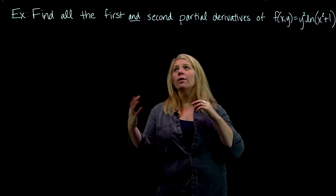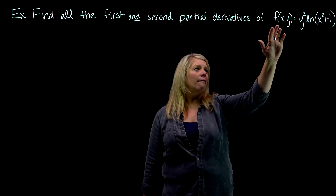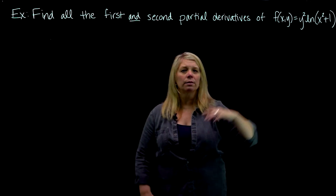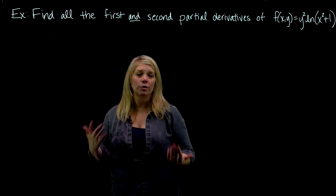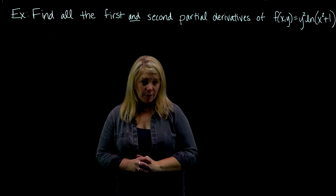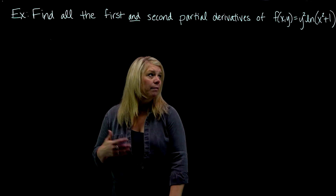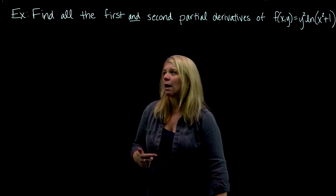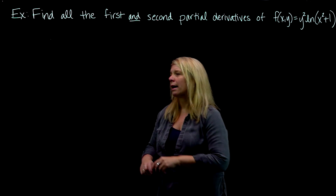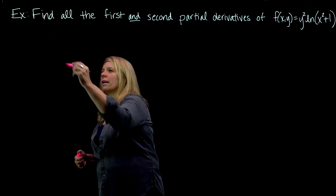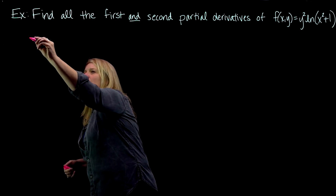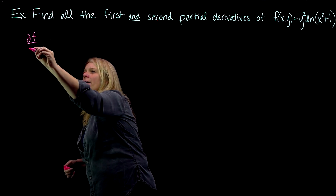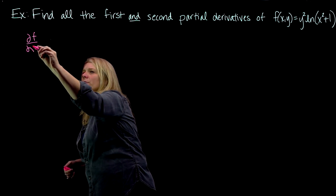For the first partial derivatives, I've got f as a function of two variables, so that means I have two first partial derivatives — one with respect to x and one with respect to y. So we'll go ahead and find those over here: the partial derivative of f with respect to x.